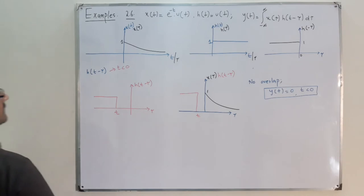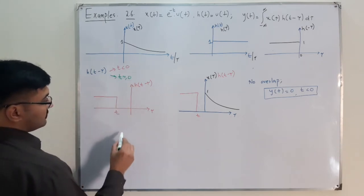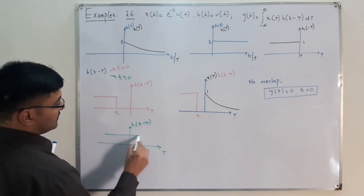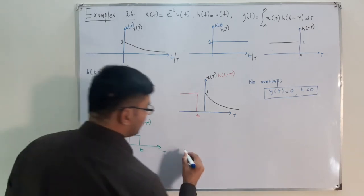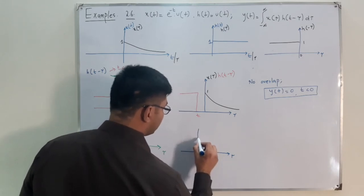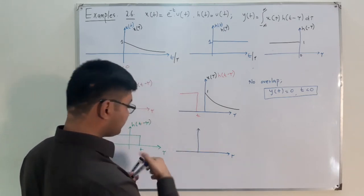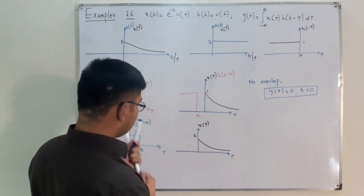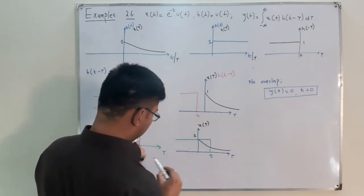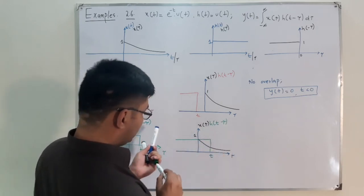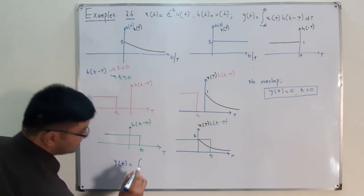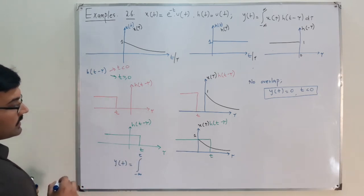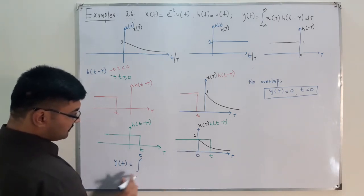The next case is t ≥ 0. Now h(t - τ) ends at τ = t, which is positive. x(τ) = e^(-aτ) for τ ≥ 0, and h(t - τ) = 1 for τ ≤ t. The overlap exists from 0 to t. So y(t) = integral from 0 to t of e^(-aτ) dτ.